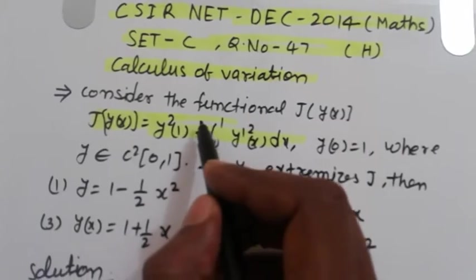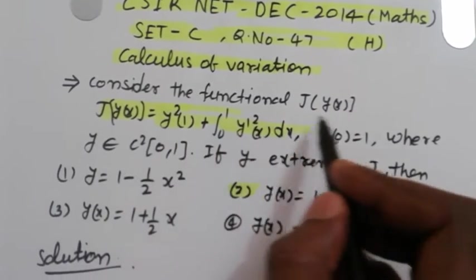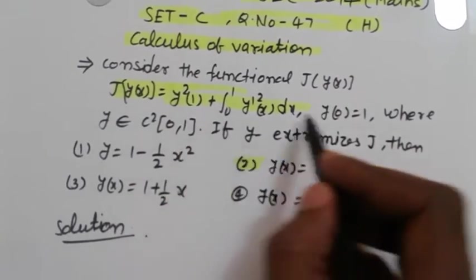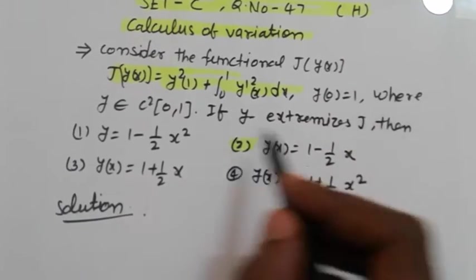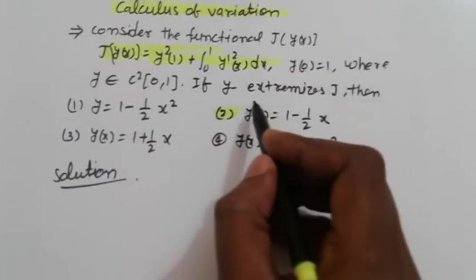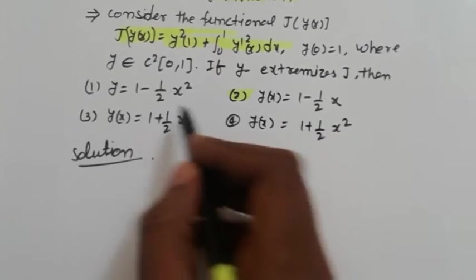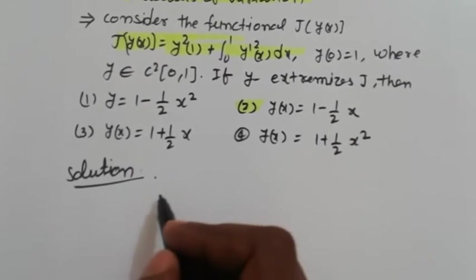Consider the functional J[y(x)], J[y(x)] is here, y(0) where y belongs to this, and if y(x) remains then here 4 options are given.